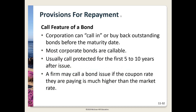A call feature on a bond allows the issuer to recall the entire issue — think of it like your option to refinance a mortgage. If market rates drop, a corporation paying 8% for 25 years could issue new debt at 5% and use the funds to call back the 8% bonds. Nowadays market rates are very volatile, so most corporate bonds include a call feature. Bonds are usually call-protected for the first five to ten years. When a firm calls a bond issue, a premium is paid — frequently equal to one coupon payment.